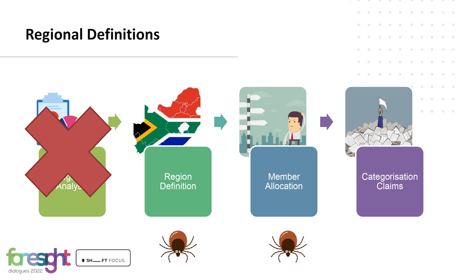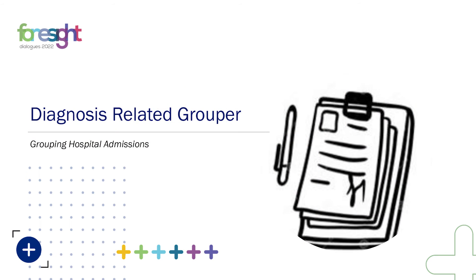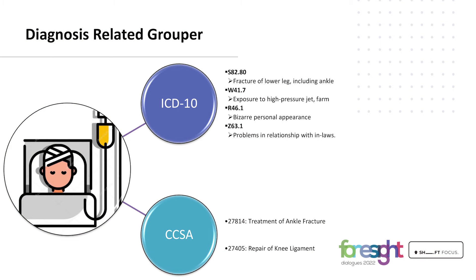Now that we've completed the member allocation part of the process, we move on to how we categorize different types of claims. Before looking into tertiary level experience such as hospital admission rates, readmission rates or cost per admissions, we need a way to group and classify hospital admission types. The Insight diagnosis-related grouper is well placed to do this and is one of the most widely used DRGs in the industry.